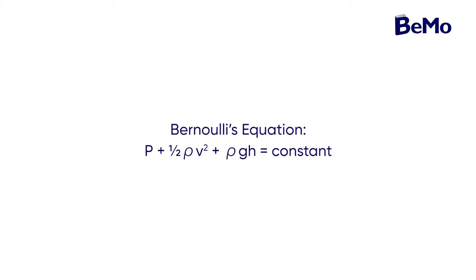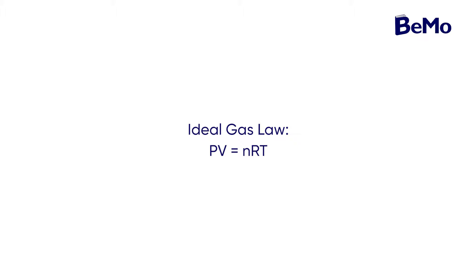Bernoulli's equation allows you to analyze a fluid moving through a tube and relates velocity to pressure. In a horizontal tube that changes in diameter, regions where fluid moves fast will be under less pressure than regions where it moves slow. Bernoulli's equation applies principles of energy conservation to a flowing fluid, where P is hydrostatic pressure, rho is the density of the fluid, V is velocity, g is gravitational acceleration (9.8 meters per second squared), and H is the height in meters. The ideal gas law describes the behavior of an ideal gas and combines ideas from various other gas laws. In this equation, P is pressure, V is volume in liters, N is amount of gas in moles, R is the universal gas constant, and T is temperature in Kelvin. The value of R depends on the units used.